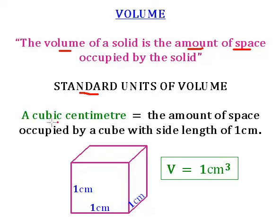One standard unit of volume is a cubic centimetre. It is the amount of space occupied by a cube with the side length of one centimetre. Here's our cube — this is larger than the actual centimetre cube. It's one centimetre by one centimetre deep by one centimetre high. That's a standard unit of volume called one cubic centimetre, or one centimetre cubed.